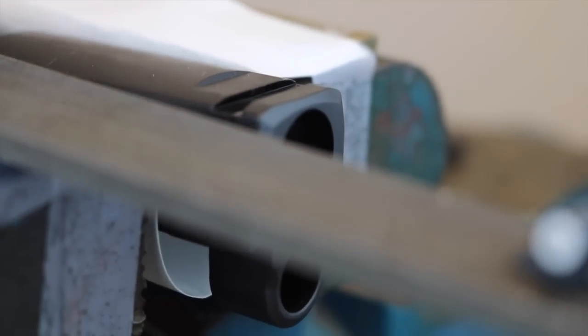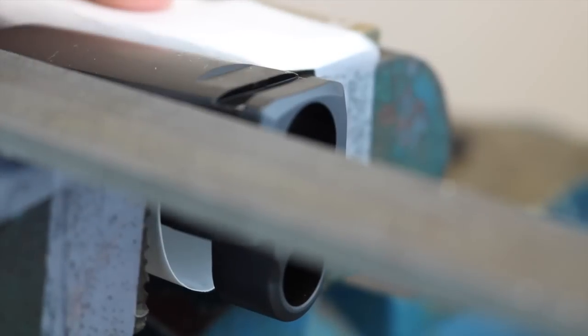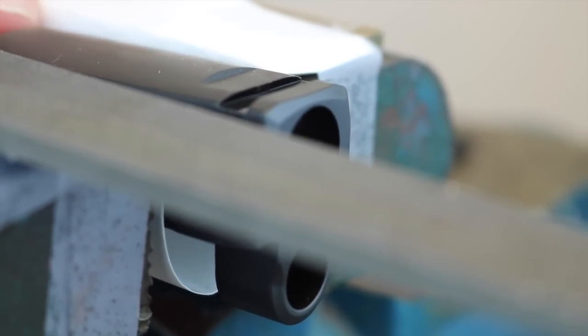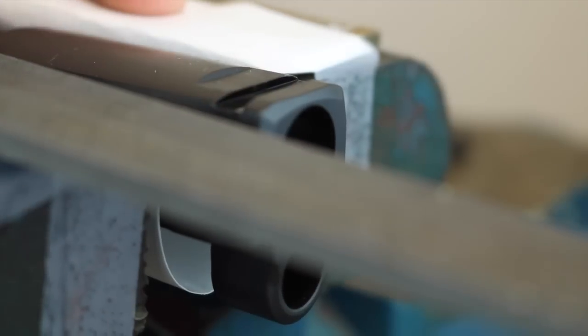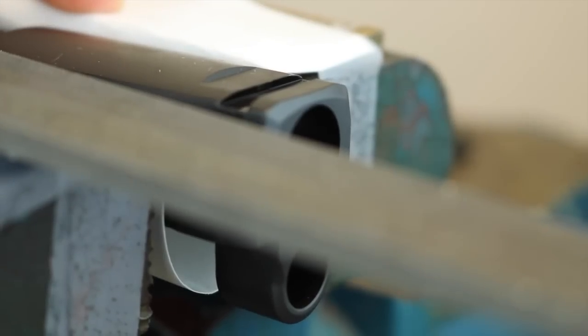As we've shown in the past, we're going to take the sight, put it on a file that's placed on a flat surface, and drag the bottom of the sight against the serrations. We're going to rotate the sight 180 degrees and repeat the process. This allows us to ensure that we maintain a flat cut on the bottom of the dovetail.